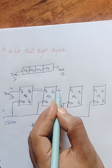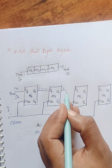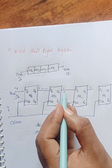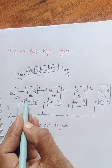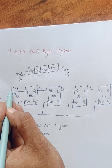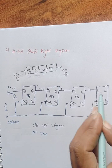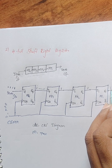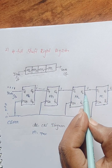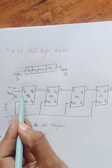Whenever the third clock pulse is applied, the data is shifted to the D2 flip-flop, so D2 output is one. Previous data shifts to D3, so D3 output is one. D4 receives fresh data. Whenever the fourth clock pulse is applied, data shifts to D1, so Q1 output is one, Q2 output is one, Q3 output is one, and Q4 output is one.